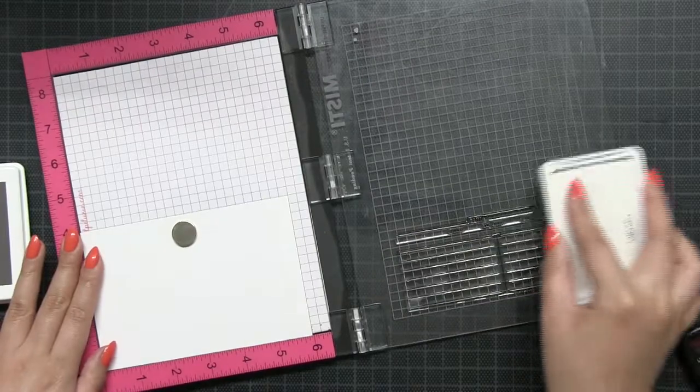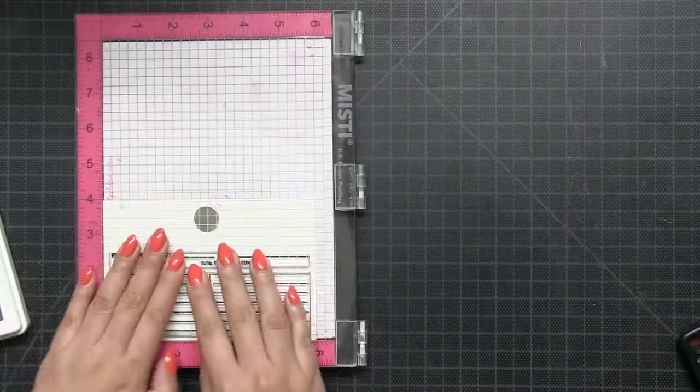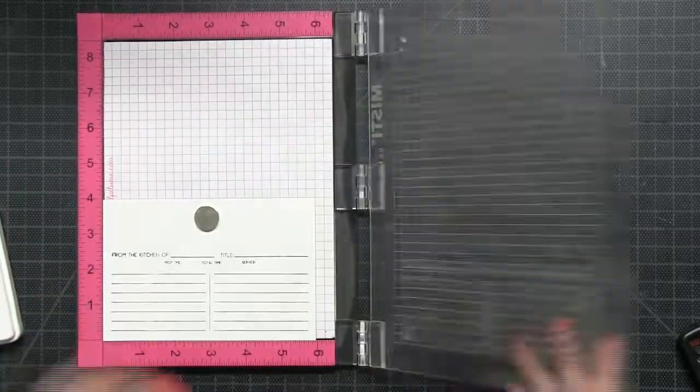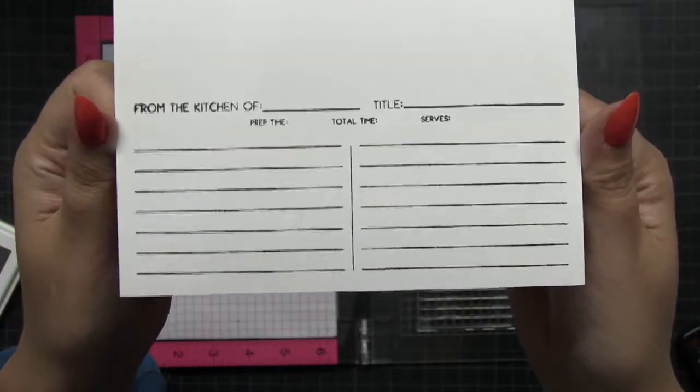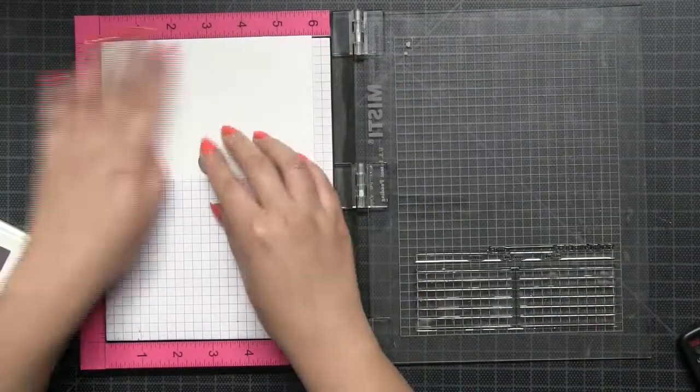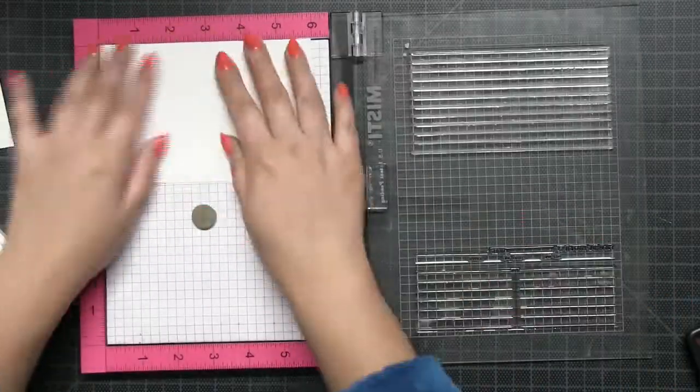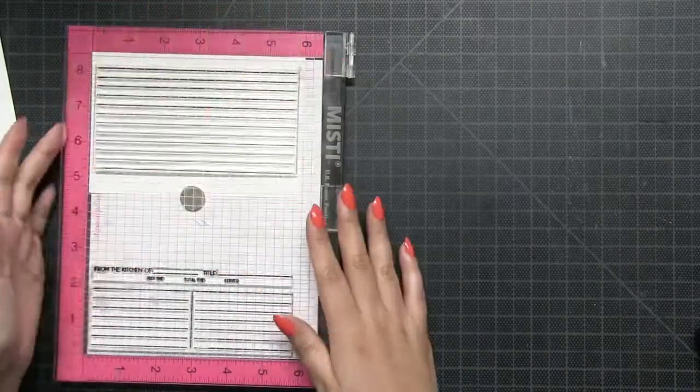I'm using our light onyx dye ink to stamp the lines. There are two stamps on my MISTI and I'm using the same light onyx ink to stamp both at the same time. This is going to help me mass produce. I'm going to turn that recipe card over and then stamp the other large stamp from the set.